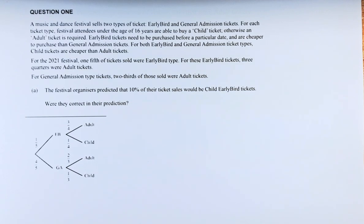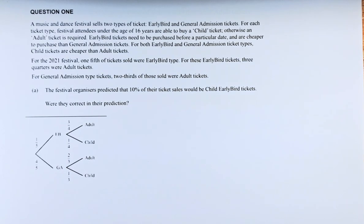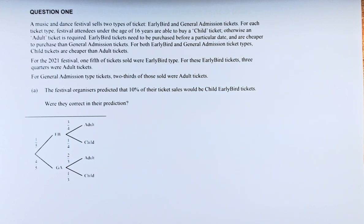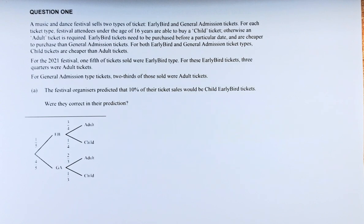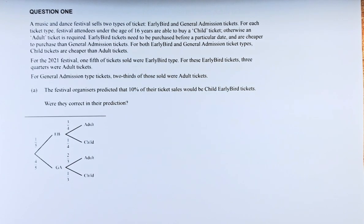For the 2021 festival, one-fifth of the tickets sold were early bird type. For these early bird tickets, three-quarters were adult tickets. For general admission tickets, two-thirds of those sold were adult tickets. The festival organiser predicted that 10% of the ticket sales would be child early bird tickets. Were they correct in their prediction?